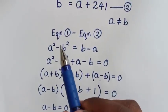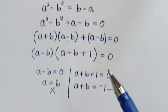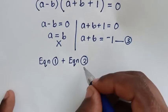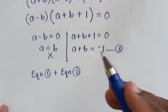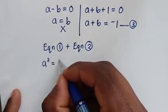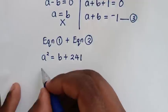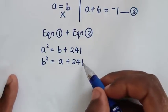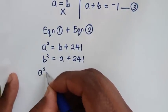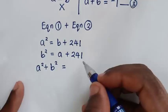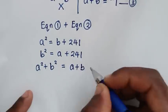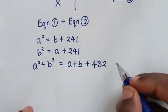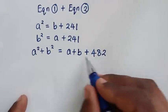In the next step we'll take equation 1 plus equation 2. Equation 1 is a squared equals b plus 241, and equation 2 is b squared equals a plus 241. Adding them: on the left side we get a squared plus b squared, and on the right side we get a plus b, then plus 241 plus 241, which gives 482.